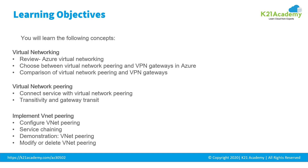VMs and services that are part of the same virtual network can access one another. By default, services outside the virtual network cannot connect to services within the virtual network. However, you can configure the network to allow access to external services, including your on-premise servers.